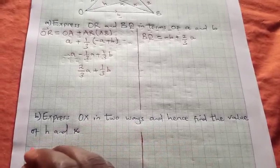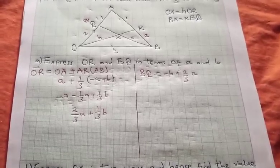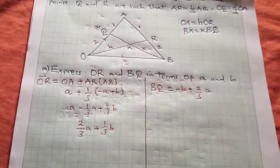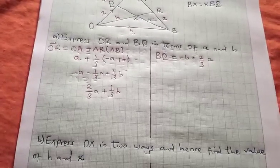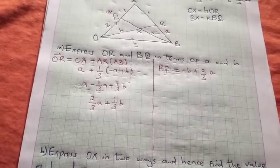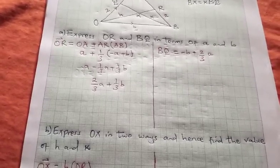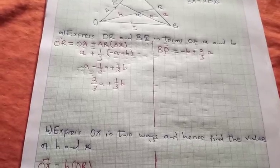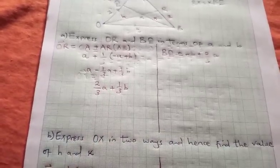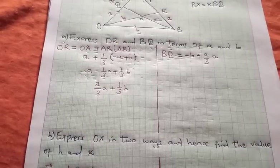We move to the second part that reads express OX in two ways. There are two ways in which you can write OX. First, you can go direct by saying OX is H of OR. We already worked out OR, so we are going to replace whatever we found up there in this bracket by saying H into OR, which is in fact 2/3 vector a plus 1/3 vector b.